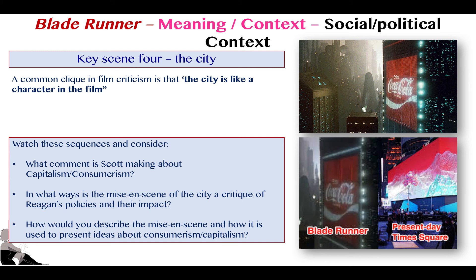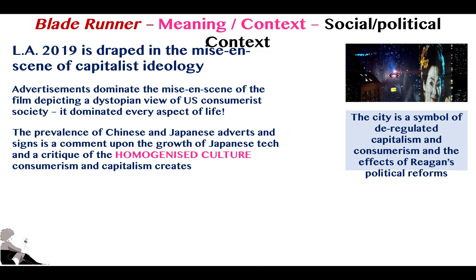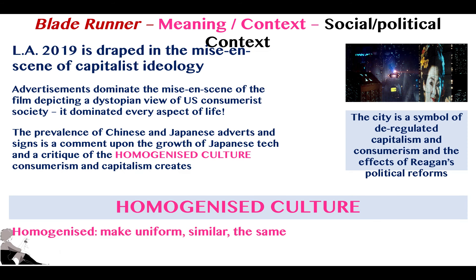What Ridley Scott is pointing out in the mise-en-scène of his film is that symbols of consumerism — like the Coca-Cola adverts in particular — dominate the skyline. If we look at modern mega-cities like London, New York, Tokyo, or Hong Kong, they all look quite similar, full of large electronic billboards promoting the same products. The world depicted in Blade Runner 2019 is actually very close to what we have now, minus the flying cars. Scott drapes the mise-en-scène of capitalist ideology across the landscape — adverts dominate, depicting a dystopian view of U.S. consumer society.